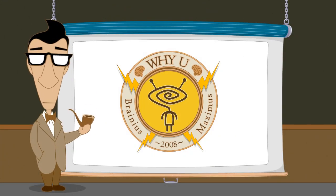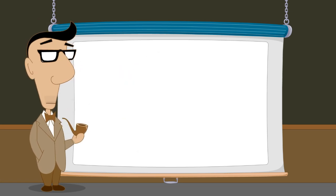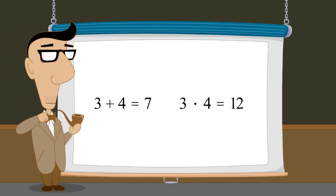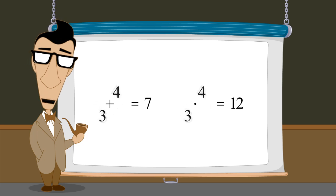Hello, I'm Professor Von Schmohawk, and welcome to Why U. In our last lecture, we saw that addition and multiplication are both commutative operations. The order of numbers which are added or multiplied can be rearranged without affecting the result.